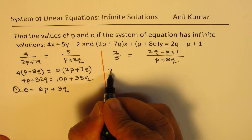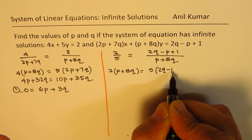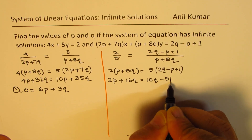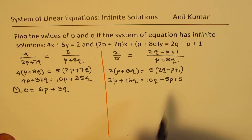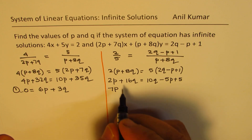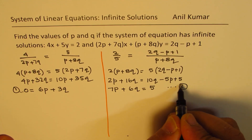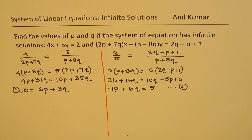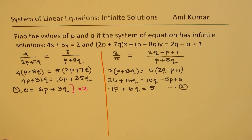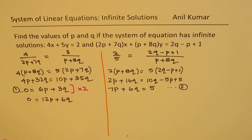Rearranging, we get 0 = 6p + 3q. Let's call this Equation 1. Now for the second condition, let's cross-multiply: 2(p + 8q) = 5(2q − p + 1), which gives 2p + 16q = 10q − 5p + 5. Taking the p's and q's to the left side: 7p + 6q = 5. This is Equation 2. To solve, we multiply Equation 1 by 2 to get 0 = 12p + 6q. Let's call this Equation 3.